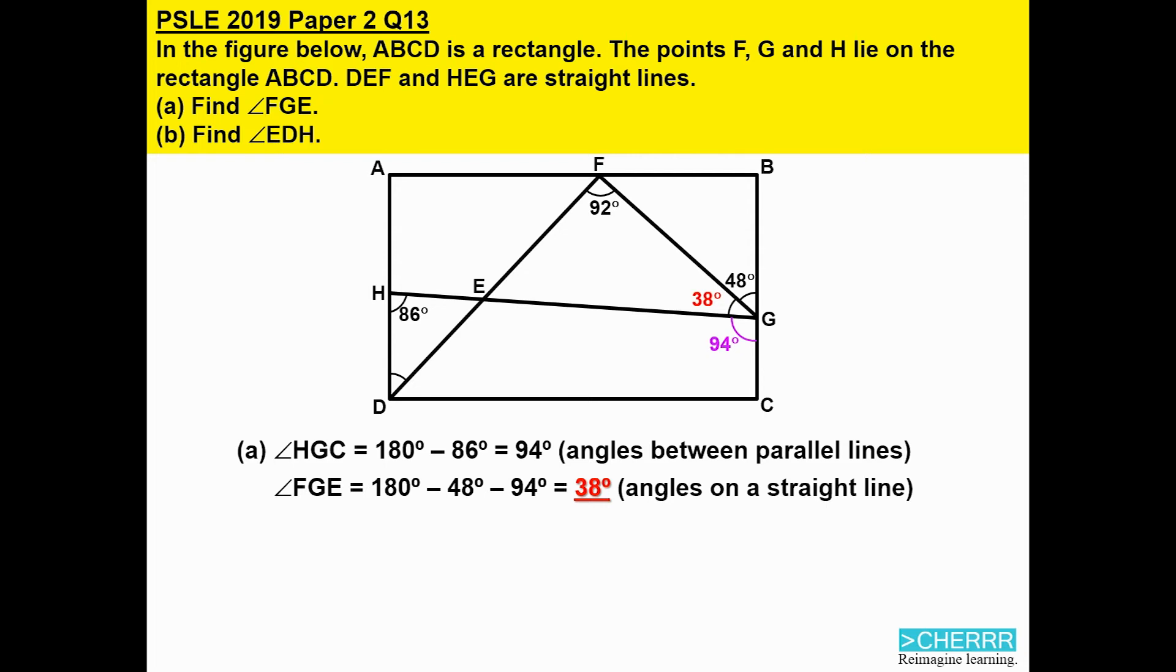There is a shortcut and many students would have learned about this property they call a Z angle. And that is actually alternate angles property. Angle DHE, which is 86 degrees, has the same value as angle BGE.